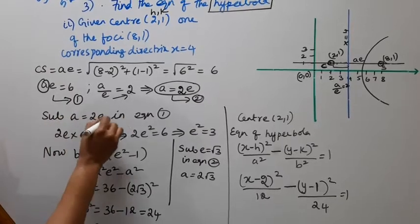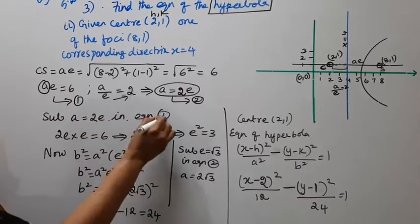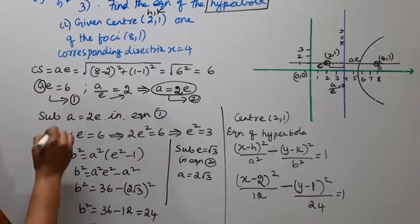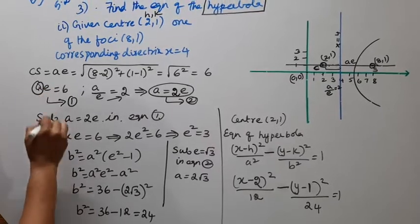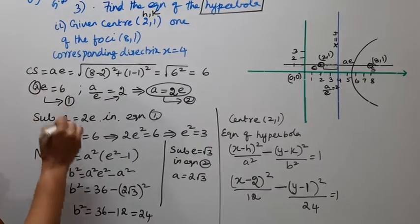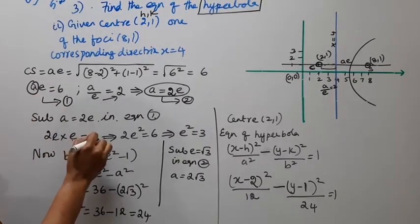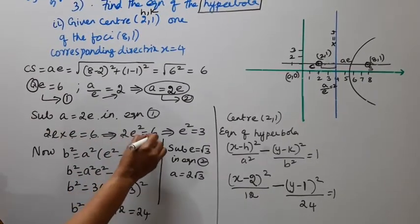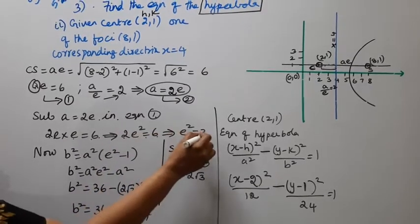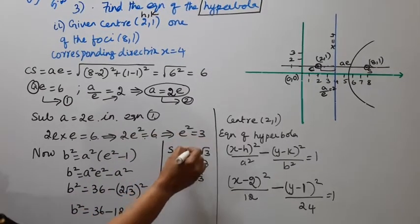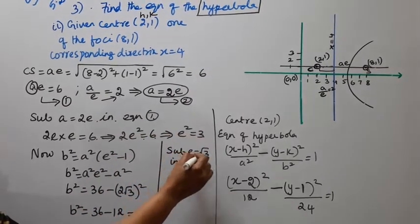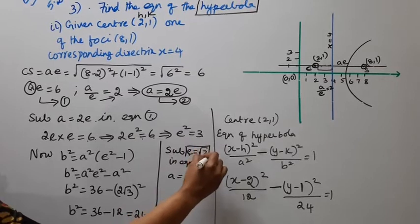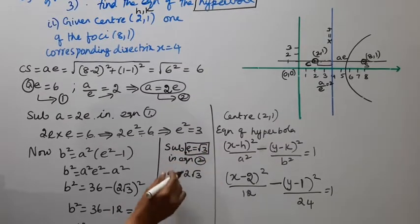a is equal to 2e (equation 1). Then 2e into e equal to 6, so 2e squared equal to 6, e squared equal to 3, e equal to root 3.